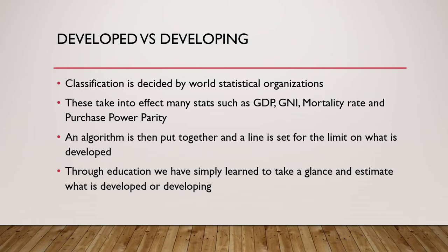Mortality rate has things to do with healthcare and all sorts of other things. Once all the data is gathered together, it's put into various algorithms that pump out certain standards, and then a line or limit is set for what is coined as developed. They also use the word industrialized — industrialized goes more off GDP, whereas developed has more to do with life expectancy and mortality rate. Through education, we've learned to take a glance and estimate which countries are developed or developing without always doing exact math.